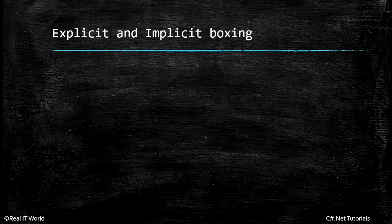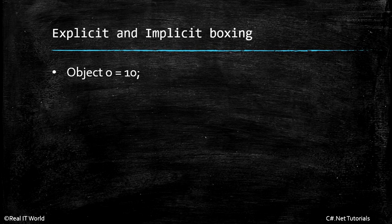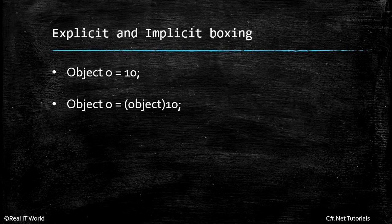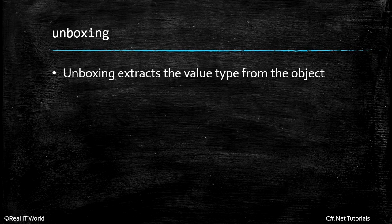Explicit and implicit boxing. When we assign a value type to object type, like: object o = 10 — where 10 is an integer, a value type — it will implicitly convert to object type and store inside object. This is called implicit boxing. When we explicitly convert the value to object while assigning, that is called explicit boxing.